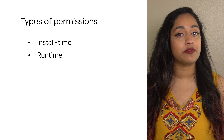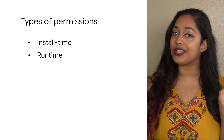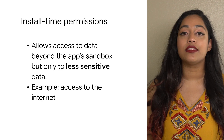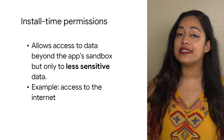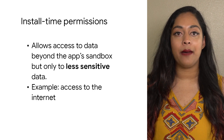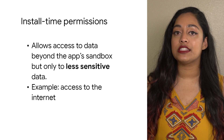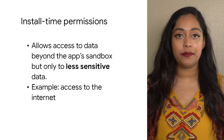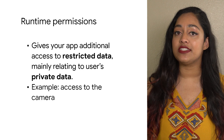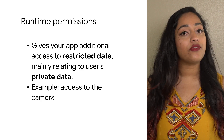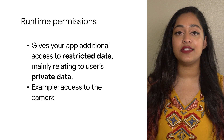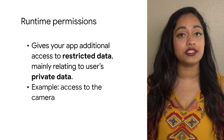Android has two main types of permissions: install time and runtime. Install time permissions allow access to the data beyond the app's sandbox, but only to less sensitive data. When you declare install time permissions in your app, the system automatically grants the permissions when the user installs your app. Runtime permissions control access to more sensitive data and actions. Therefore, you need to request them in your app before you can access the sensitive data or perform restricted actions.